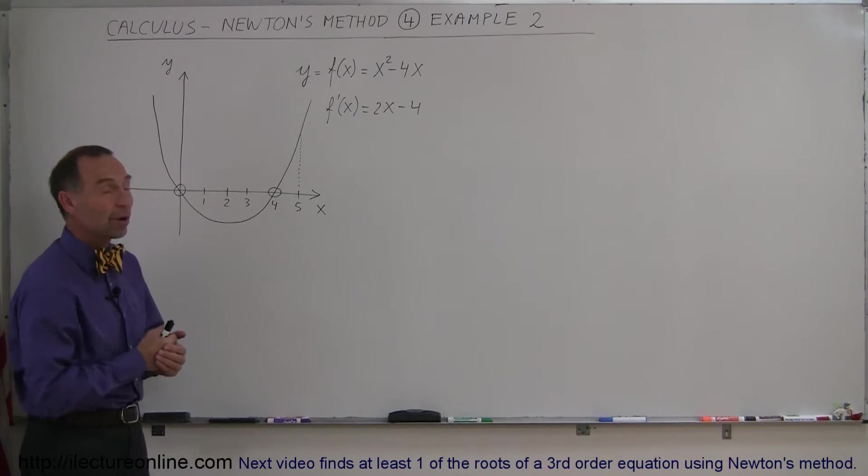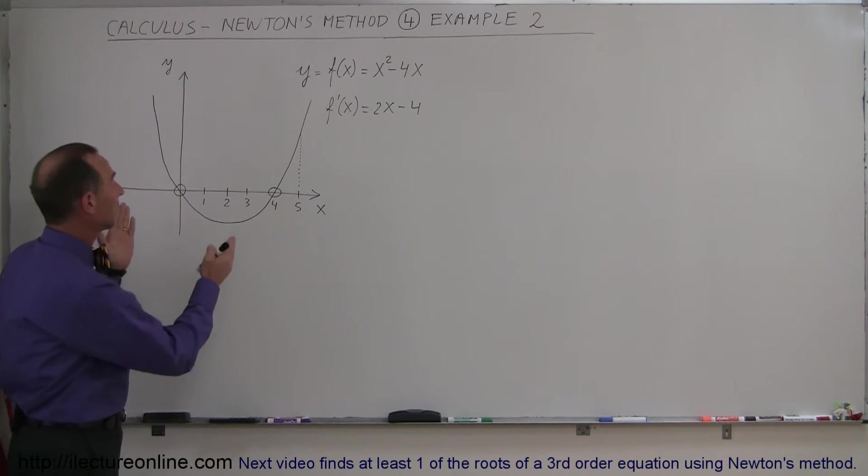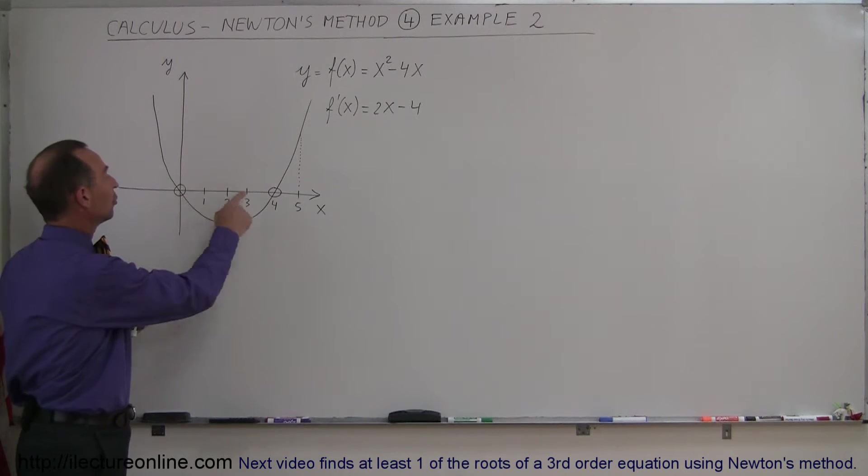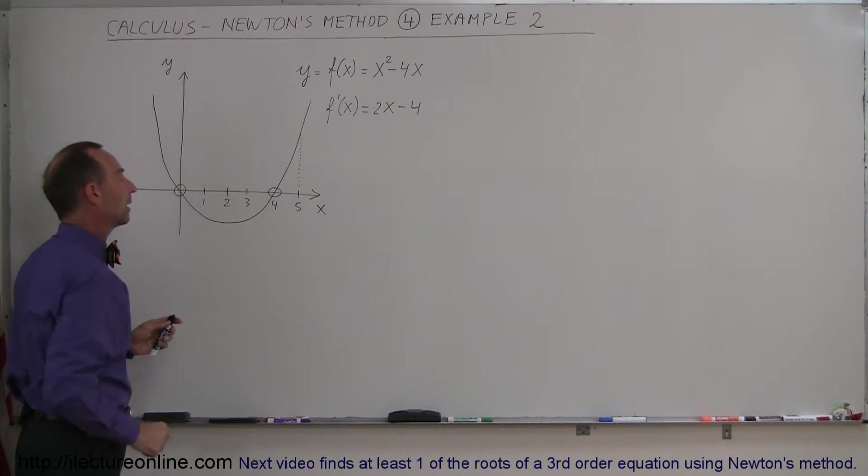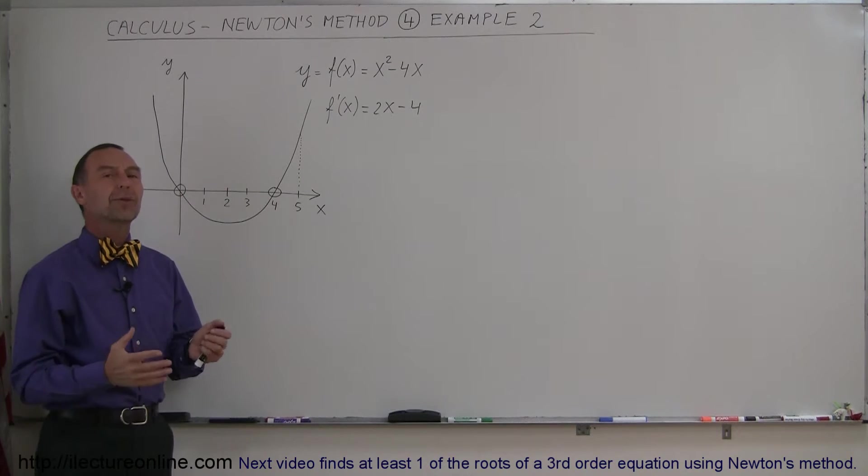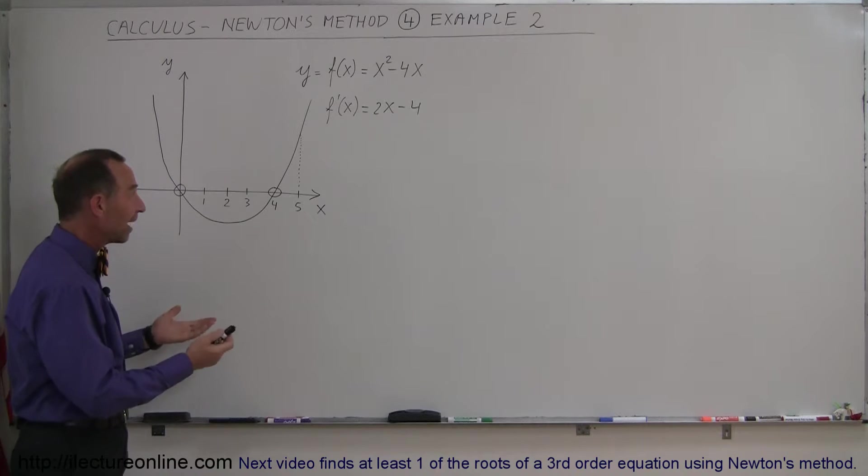And here we have an equation, it's a quadratic equation, x squared minus 4x. It's a parabola, it has two roots, one at 0 and one at x equals 4. So let's pretend we don't know that and we have to find the roots.